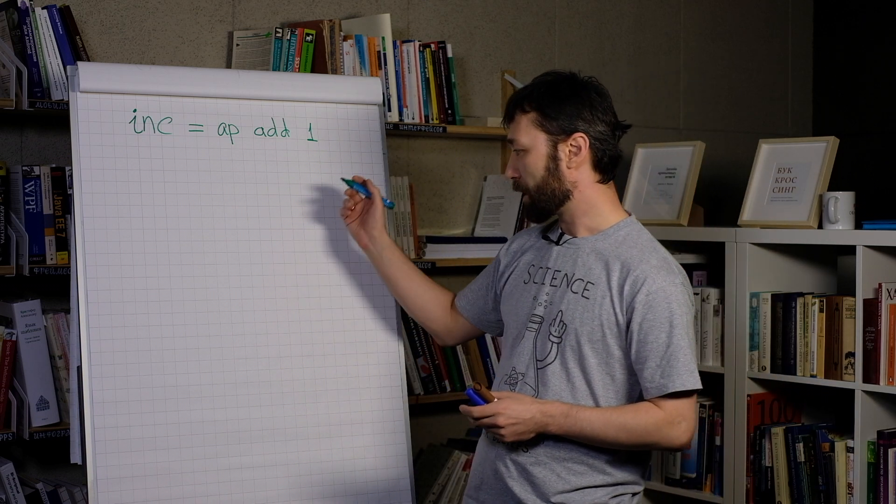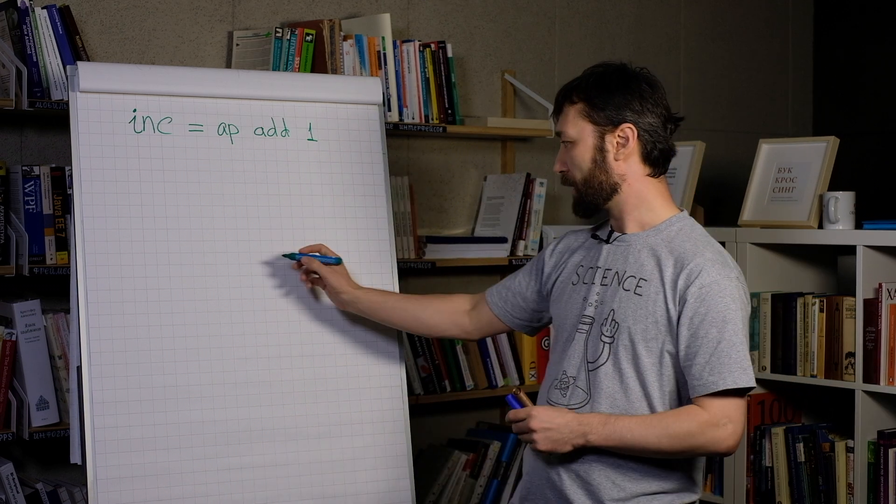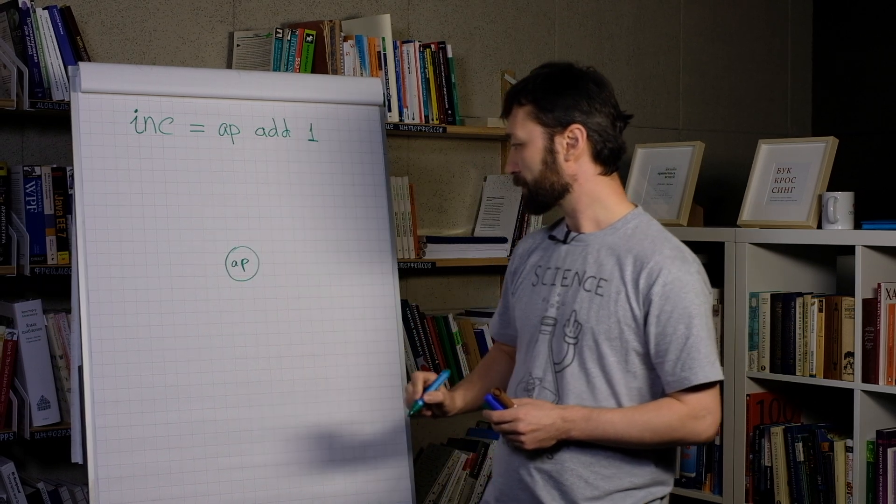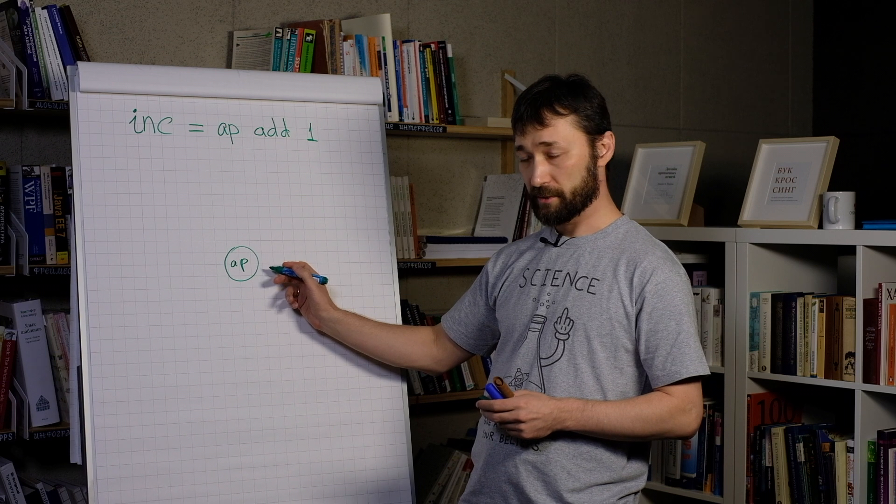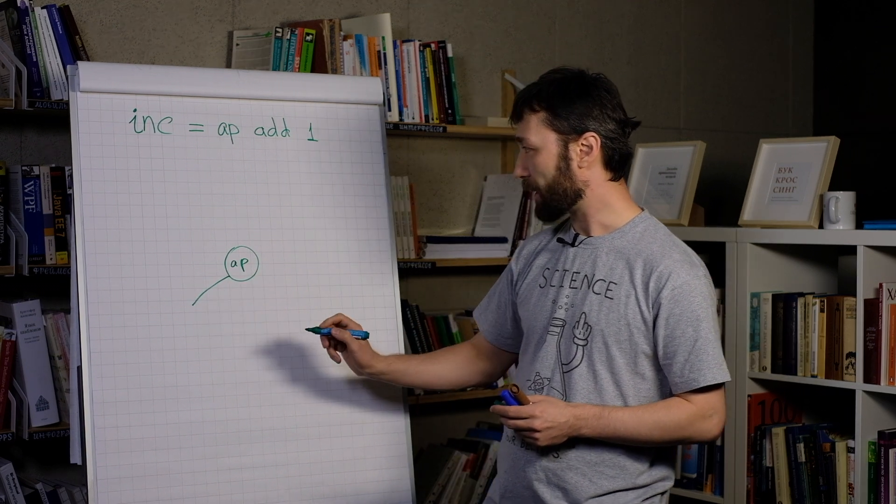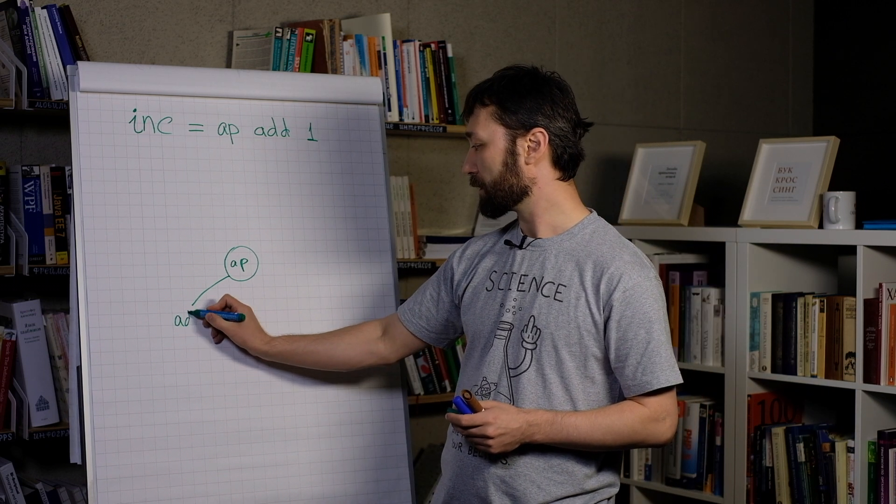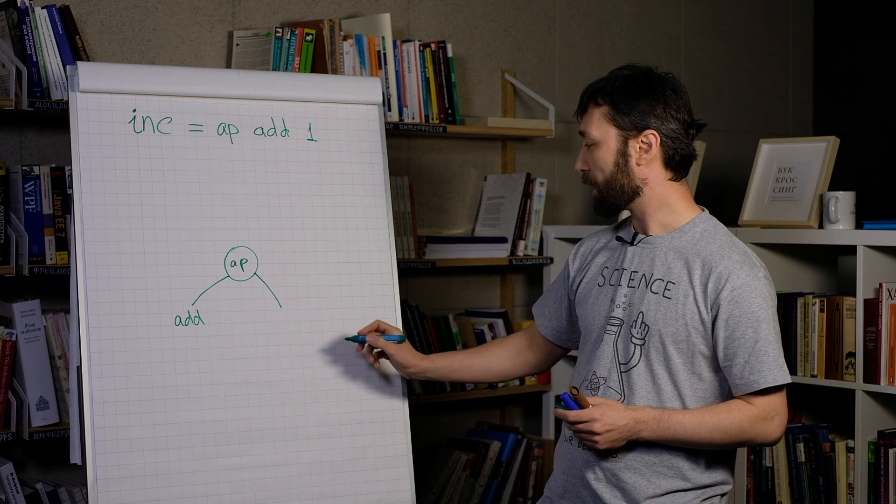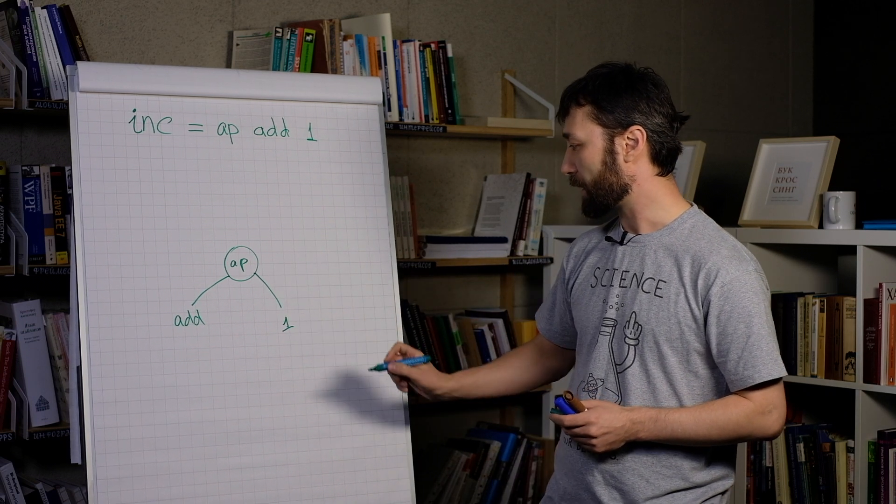We can draw it like a tree. This way. App is a node of this tree. And it has left child function, add in our case. And the right child, the argument, one in our case.